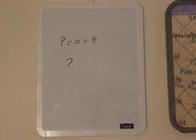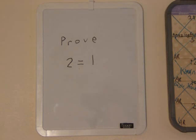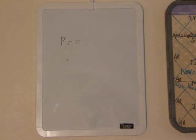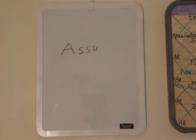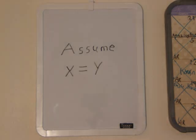What we're trying to do is we're trying to prove that 2 equals 1. First, we have to assume that x equals y.